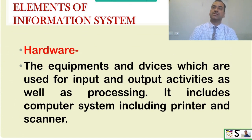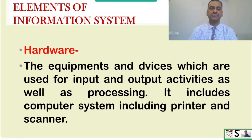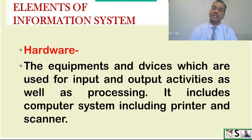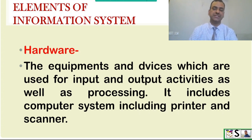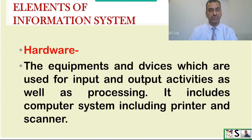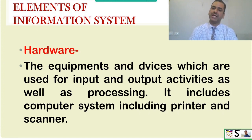What are the elements of information system? Number 1: Hardware. The equipment and devices which are used for input and output activities as well as processing are known as hardware. It includes computer systems including printer, scanner, laptop, webcam, keyboard, mouse, etc.